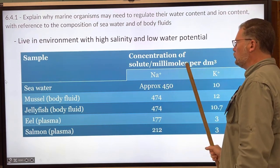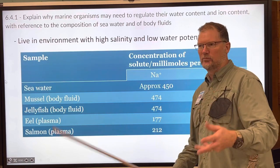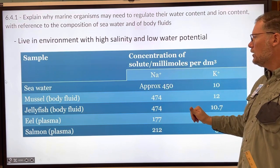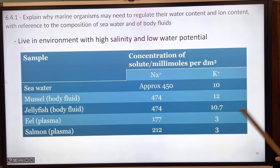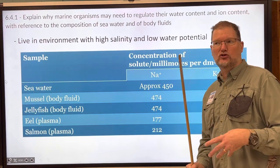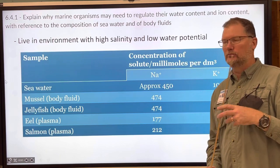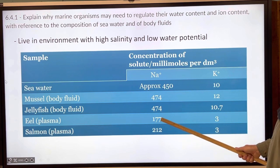A mole is a measure of atoms — if you've taken chemistry you know this. An ion is an atom with a charge. Looking at the table: potassium is much lower in seawater, but look at mussel body fluid — it's very close to seawater. Jellyfish are about the same. Eels, however, can go to fresh water — they actually spawn in fresh water, are born there, and then go back out to salt water, which is why their numbers are markedly different.